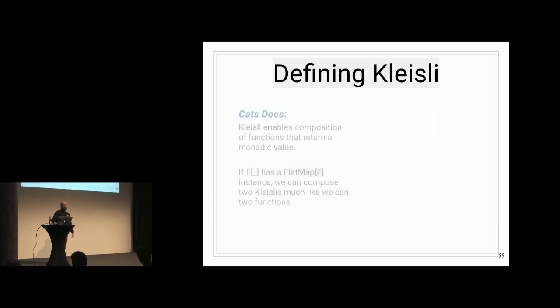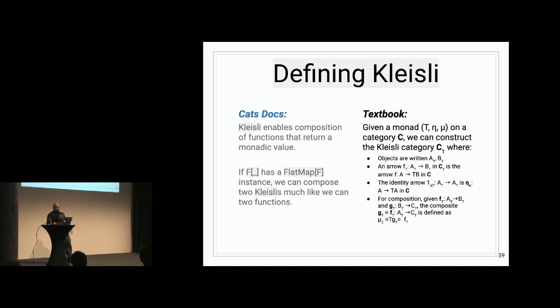So again, if we look at the definitions and contrast between the Katz docs and the textbook, Katz docs will just say that Kleisli enables composition of functions that return a monadic value. If the F provided has a flat map instance, you can compose two Kleislis together as if we were composing two functions, okay? The textbook definition is a little bit more involved. This is quoted in an extractive way from Steve Awodey's textbook. It's given a monad T, rho, and mu, where T is a functor effectively, the functor that has an adjunction, and a rho, which is the unit, which is like the constructor for a monad, and a mu, which is like flattening operation, you can get a Kleisli category. So I'm going to skip over this stuff, but just talk about the fact that because we have a functor, we're creating this new category that has all of these A's and B's and C's in some context. And the most important part is this.